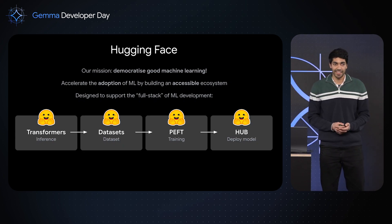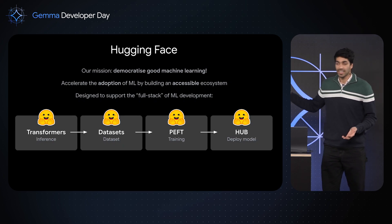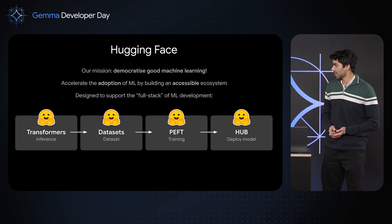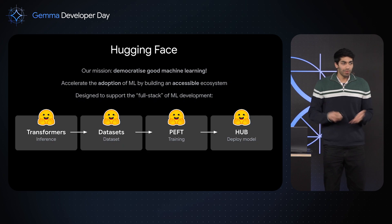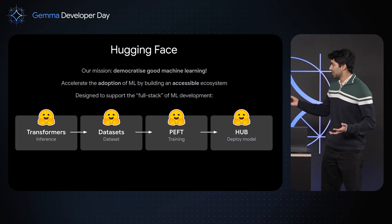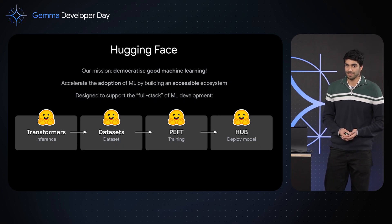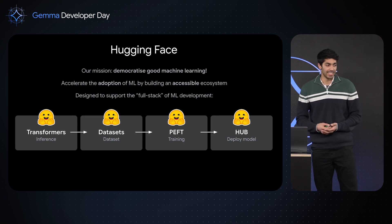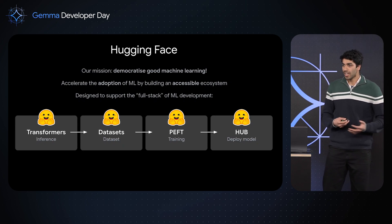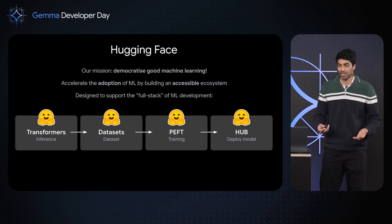What links these four things together is the Hub. The Hub is the thread that links the models, datasets, and all of the demos that the community share. What we're going to see in this talk is how you as open source developers can leverage the open source ecosystem to stand on the shoulders of giants — leveraging all the open source artifacts released not just by Google, but also the community, to expedite your work and maximize your potential.